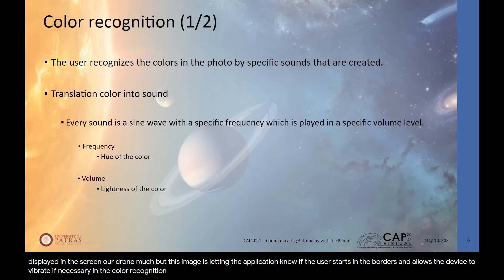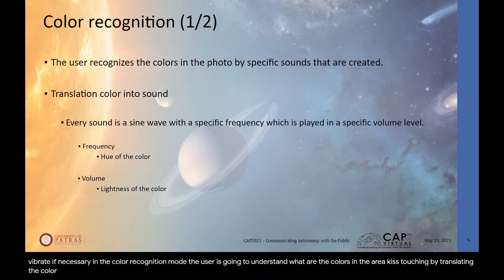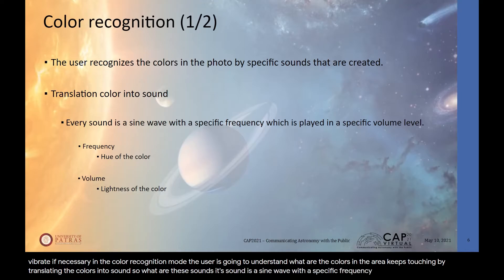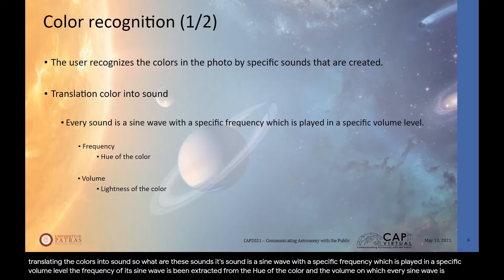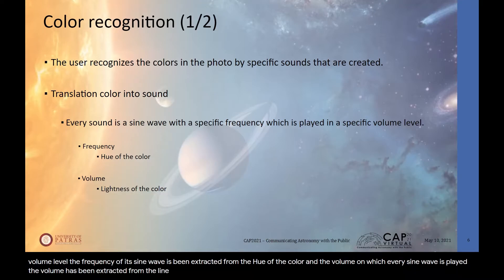In color recognition mode, the user understands the colors in the area they are touching by translating those colors into sound. Each sound is a sine wave with a specific frequency played at a specific volume level. The frequency of each sine wave is extracted from the hue of the color, and the volume at which each sine wave is played is extracted from the lightness of the color. Hue and lightness are two main variables of the HSL digital color representation.